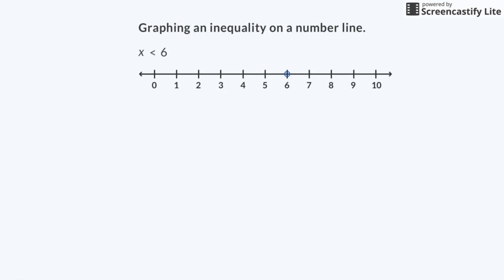Now I need to draw a line with an arrow to graph the inequality. To graph x is less than 6, I draw an arrow starting at 6 and going to the left, because numbers less than 6 are to the left of 6 on the number line. The arrow shows that the graph extends endlessly in that direction. This graph shows that all of the numbers that are less than 6 are solutions to the inequality. I can test it by picking any number shown on the graph and substituting it for x in the inequality.